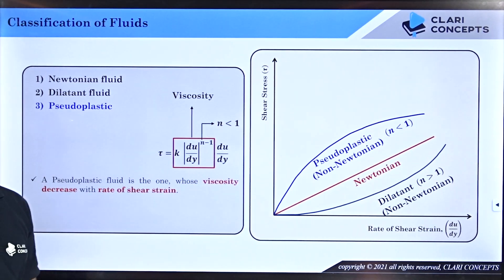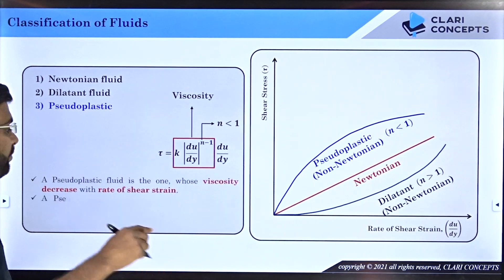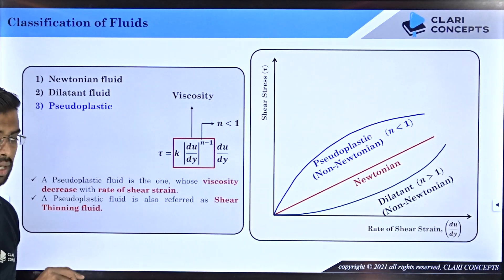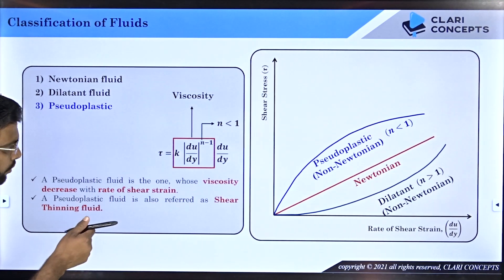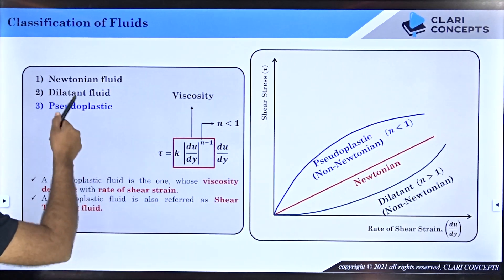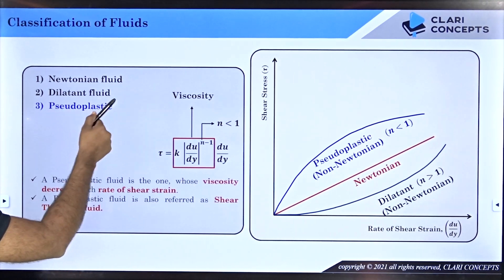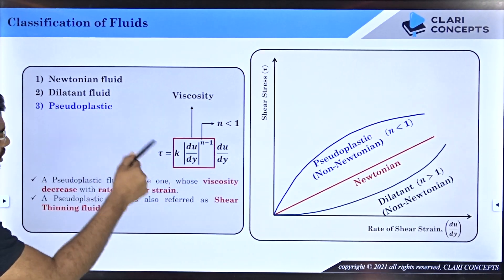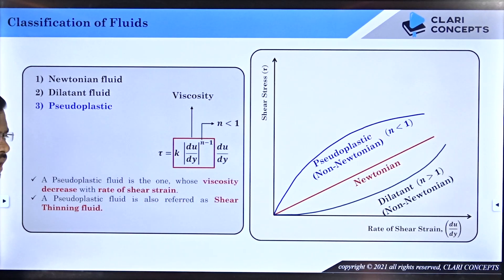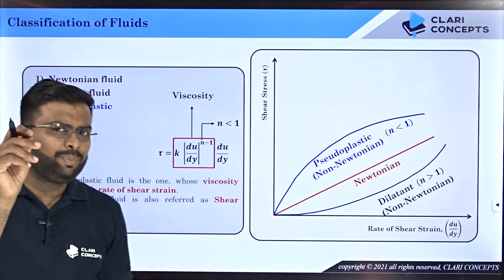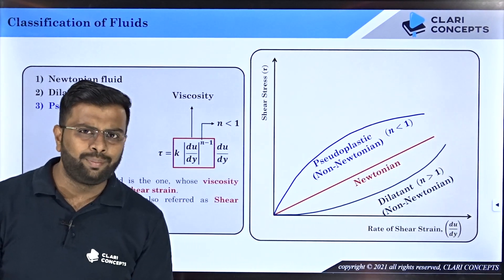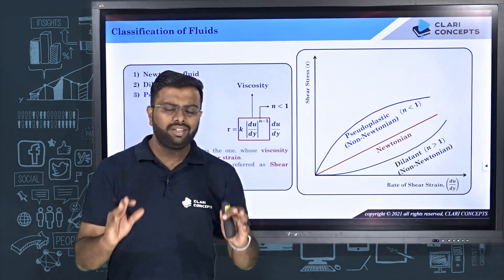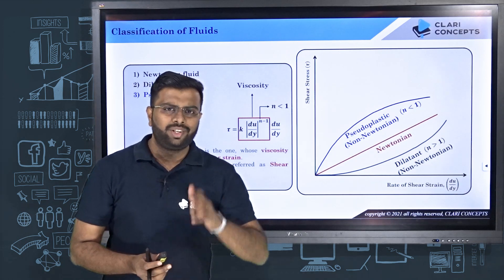Pseudo plastic fluids are ones whose viscosity decreases with the rate of shear strain, and therefore they are also known as shear thinning fluids — the opposite of dilatant (shear thickening) fluids.